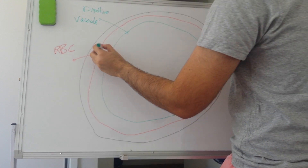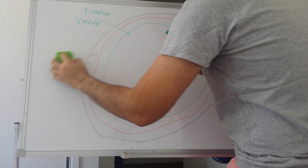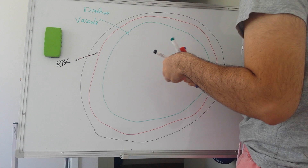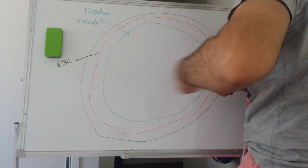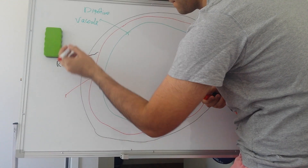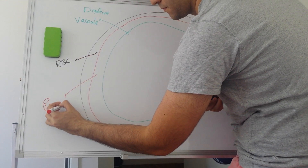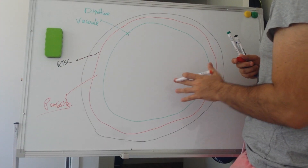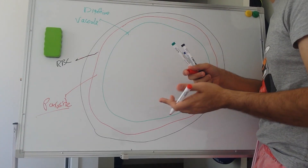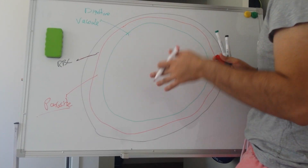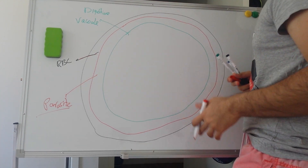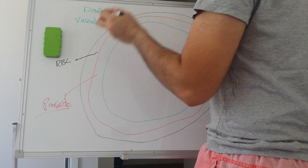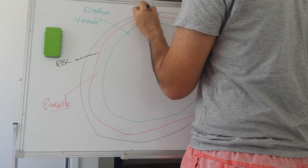So to clarify the diagram: this is the red blood cell, the red thing is the parasite, and inside the parasite is the digestive vacuole. The digestive vacuole is actually smaller, but I'm making it larger for the sake of explaining the essential mechanism that occurs inside it. And this here represents our hemoglobin inside the red blood cell.